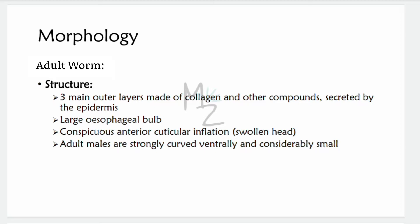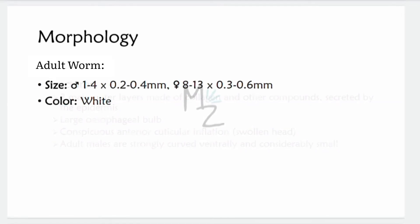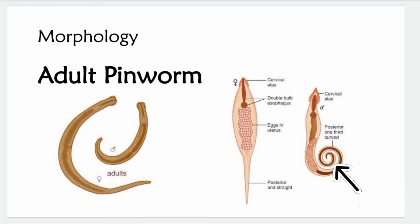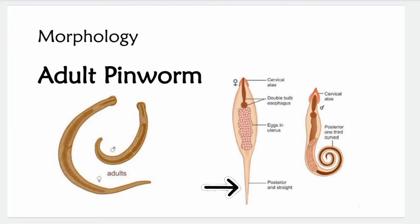Adult males are strongly curved ventrally and considerably smaller than females. The adult male size varies from 1–4 × 0.2–0.4 mm, while the female varies from 8–13 × 0.3–0.6 mm. They are white in color with whitish elongated tubes. In the diagram, both male and female live together but separated; the female is larger with a straight posterior and a uterus filled with eggs, while the male has a coiled/curved tail and a double esophageal bulb.